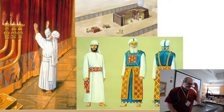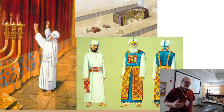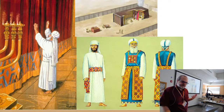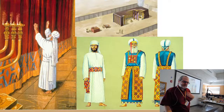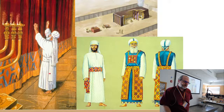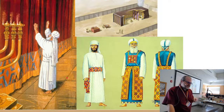First, the high priest washes at the laver and dresses in Day of Atonement clothing — not his normal high priest clothes. The normal attire has white clothes over a blue robe, an ephod like an apron, a breastplate, shoulder pieces, and a special headpiece with a crown reading 'Holiness to the Lord.' But on the Day of Atonement he wears a simple white robe with white undergarments, a white headpiece, and a white sash — everything pure white.